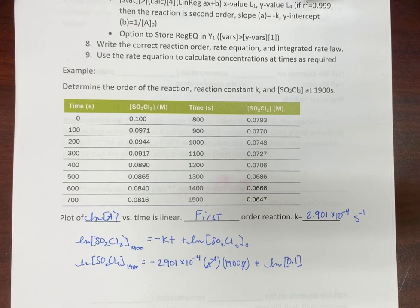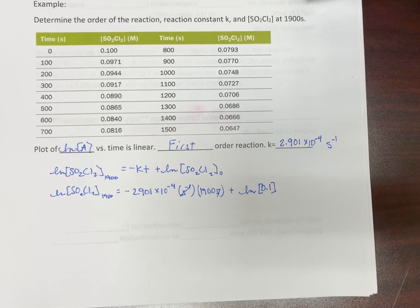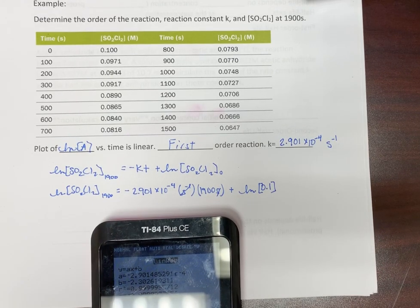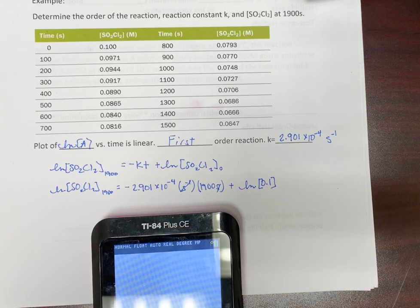Plus our natural log of our initial time or initial concentration, 0.1. Okay. So there's no real, sometimes it'll say how much time has passed. Sometimes you'll have to figure out some weird things. Okay, so let's, we can go up. We can say negative 2.901 times 10 to the negative fourth times 1,900 plus natural log 0.1.